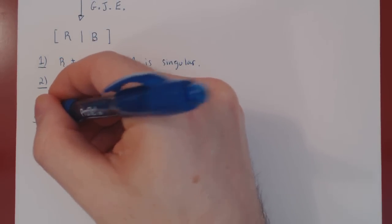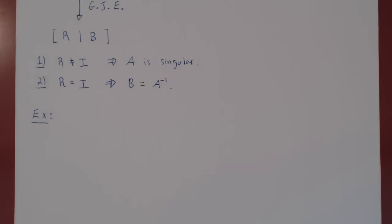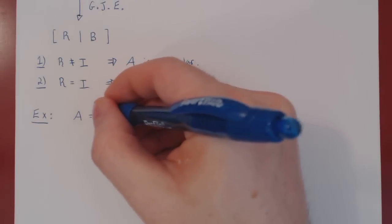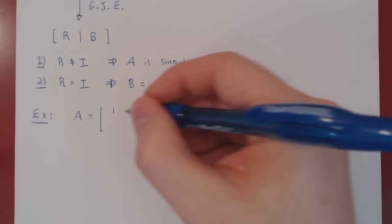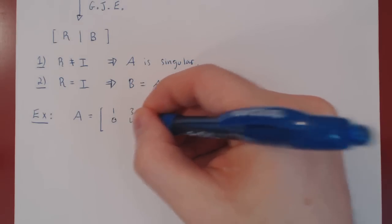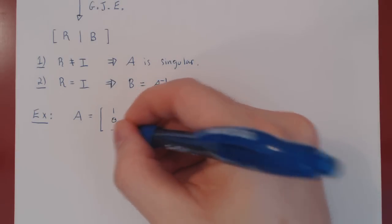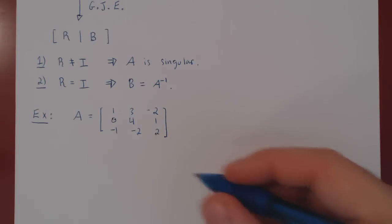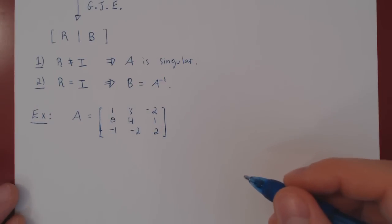For simplicity of the calculations, we'll take in both cases a 3 by 3 matrix. The idea is the same for larger square matrices, except the calculations are longer. Let's take matrix A to be: [1, 3, -2; 0, 4, 1; -1, -2, 2]. So we have here a 3 by 3 matrix. Let's apply the algorithm.